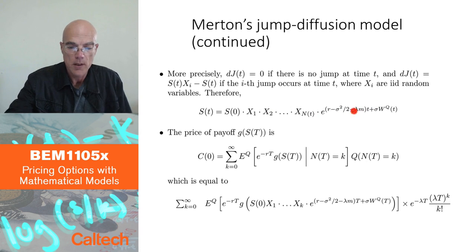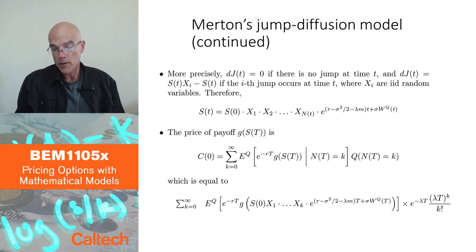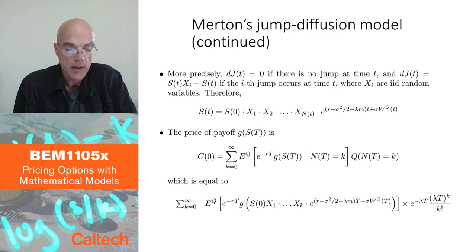So you go like this. As long as there is no jump, forget about X's. You have S(0) times this. First jump comes. You multiply by X1. Then you move your t forward, forward, forward until the next jump comes, multiply by X2, and so on. So there is actually an explicit formula. That's how the stock price would look like in this model.